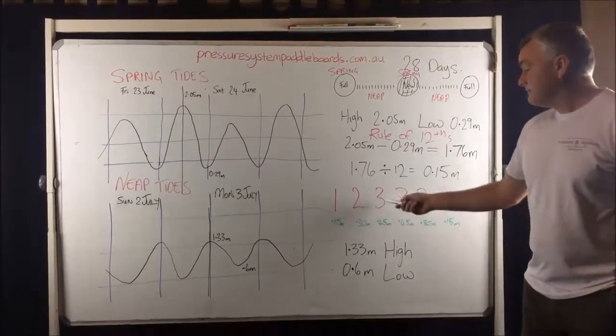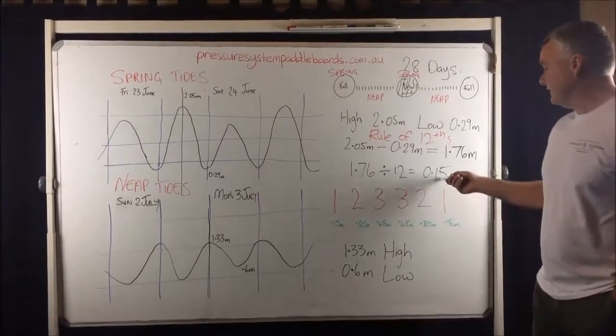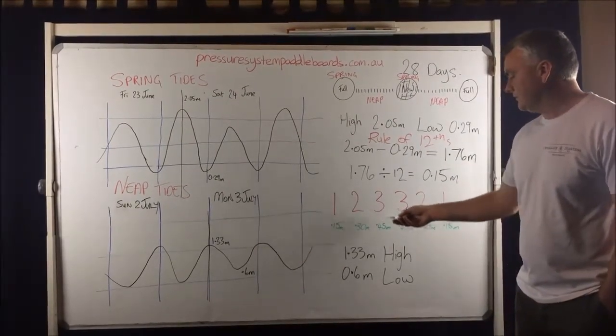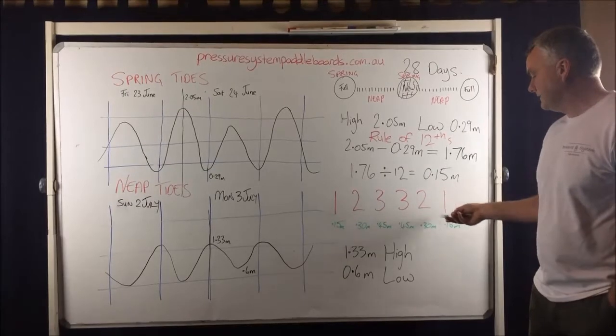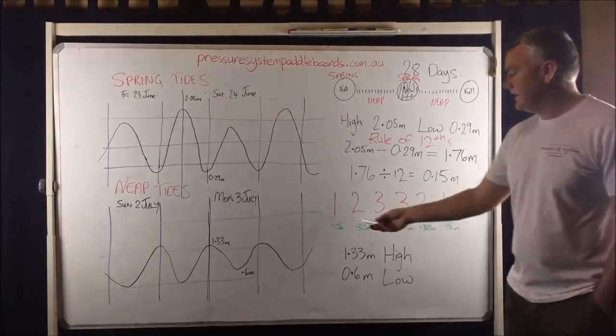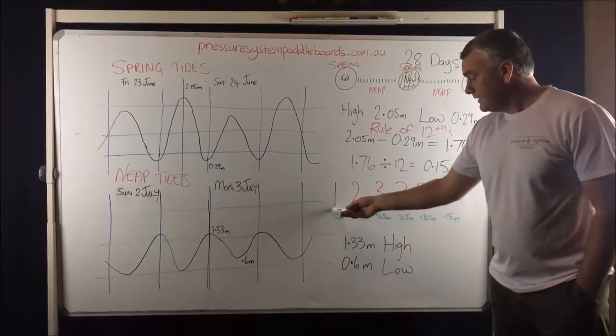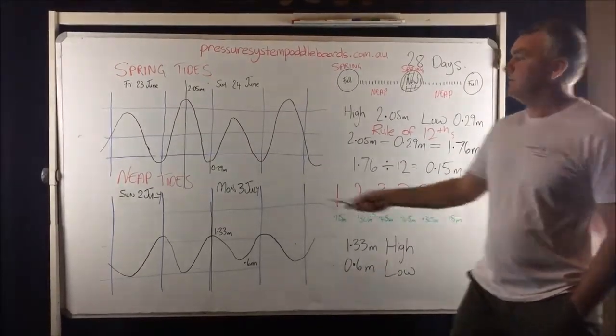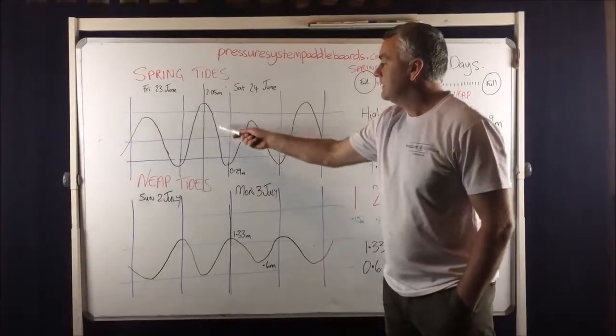Then on the third hour it's 3/12ths. So 3 times 0.15, which is 0.45. So it's moving 3 times as fast in these middle hours. And then it starts to slow down again. So that's quite basic, isn't it? It starts off quite slow and it builds up momentum and then it eases off. And that's why we get this.